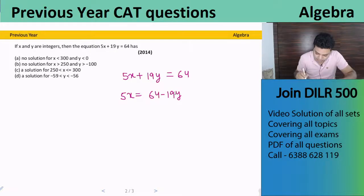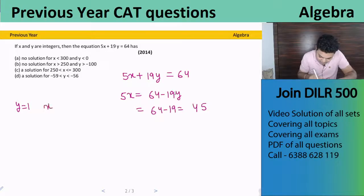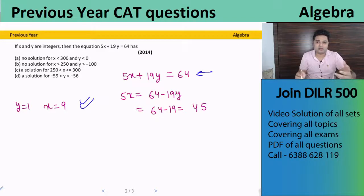If y equals 1, we get 64 minus 19, that is 45. 14 minus 9 is 5 and 5 minus 1 is 4. That will give us x equals 9. So this is our first solution. And this equation has infinite solutions.